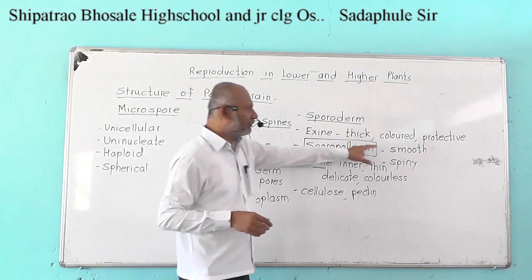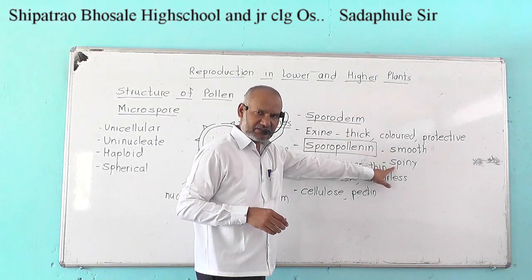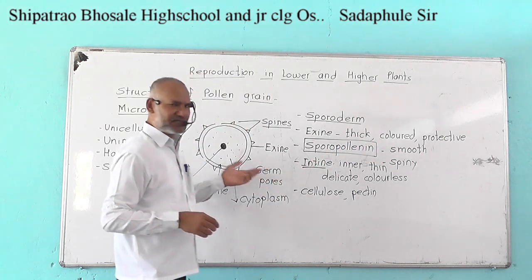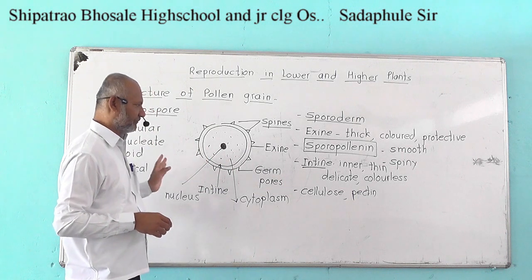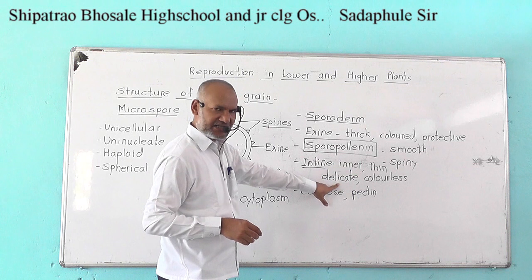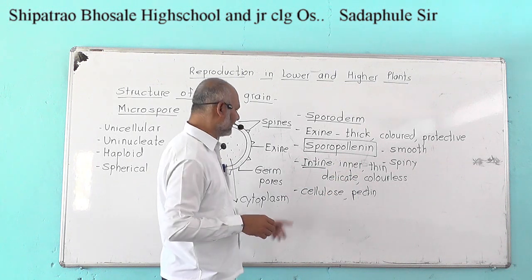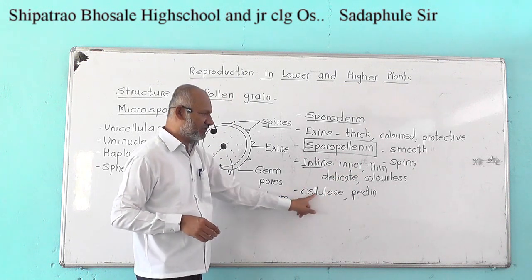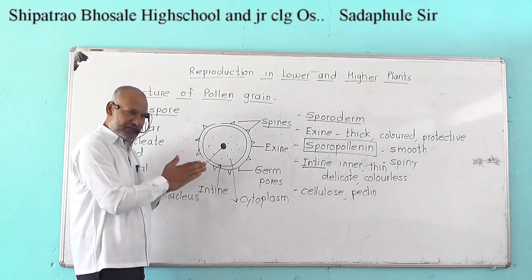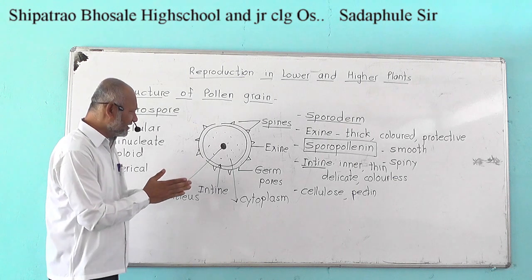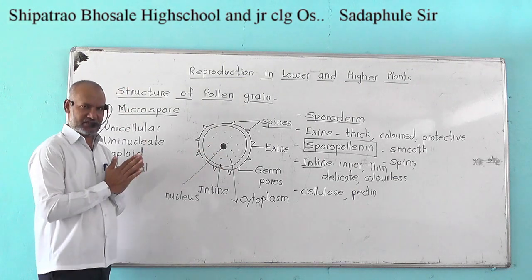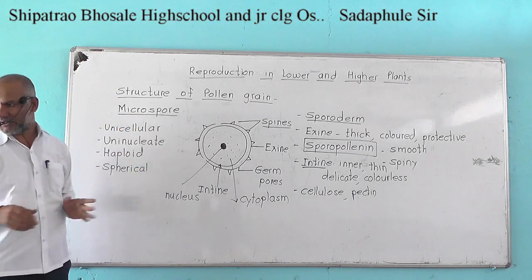The exine may be smooth or spiny. Spiny exine is the characteristic feature of insect-pollinated plants. The intine is inner, thin, delicate, and colorless, composed of cellulose and pectin, and it encloses the cytoplasm and haploid nucleus. That is the structure of pollen grain.